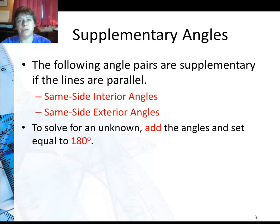To solve for an unknown, since they're supplementary, you're going to add the angles and set it equal to 180 degrees. So a lot like the work we did with linear pairs and supplementary angles in general. So your equation looks like the first angle plus the second angle equals 180.